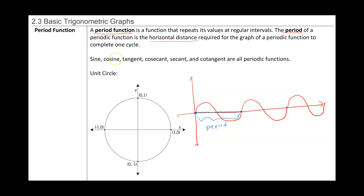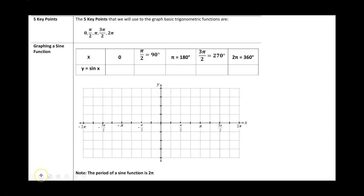Sine, cosine, tangent, cosecant, secant, and cotangent are all periodic functions. Today our focus is going to be to graph these periodic functions, starting with sine of x. For sine and cosine, there are five key points we're going to use to graph these functions.